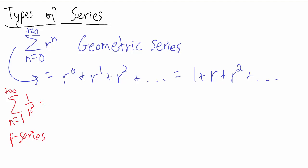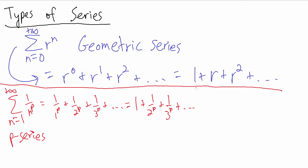So if n is 1, we have 1 over 1 to the p plus 1 over 2 to the p plus 1 over 3 to the p plus dot dot dot, which simplifies to 1 plus 1 over 2 to the p plus 1 over 3 to the p plus dot dot dot. So that's a p series. And by the way, geometric series and p series, they both have special conditions under which they actually converge and under which they diverge. And we'll talk about those when we get to the respective videos for these types of series. So we have a geometric series up here and we have our p series down here.